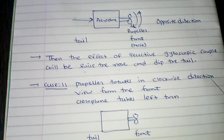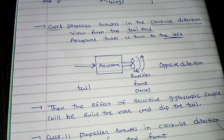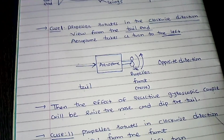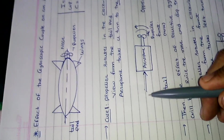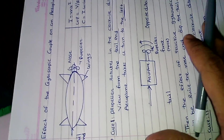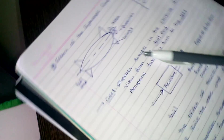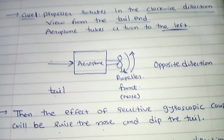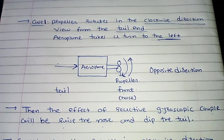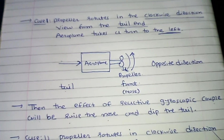The effect of reactive gyroscopic couple will be raise the nose and dip the tail. To repeat the same procedure: propeller rotates in clockwise direction, so make one arrow in clockwise direction. Second condition is view from the tail end, so move the notebook from the tail side. Aeroplane takes a turn to the left, so make arrow to the left side. If both arrows are in opposite direction, then the answer is always raise the nose and dip the tail.